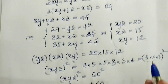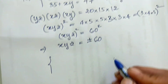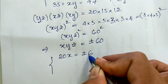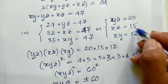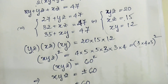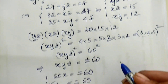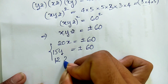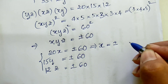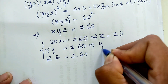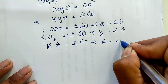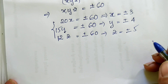Therefore hyz equals plus or minus 60. Since yz equals 20, we get h times 20 equals plus or minus 60, so h equals plus or minus 3. Since hz equals 15, we get y equals plus or minus 4. And since hy equals 12, we get z equals plus or minus 5.